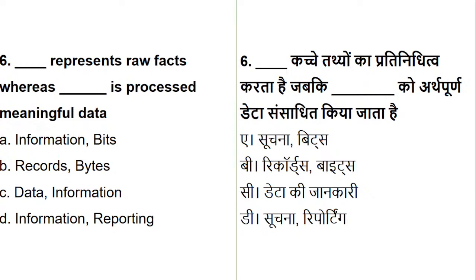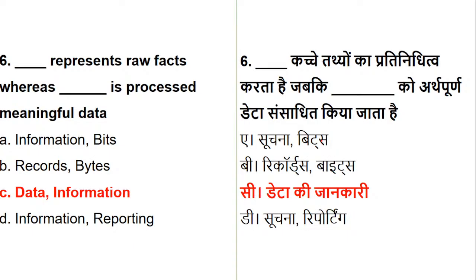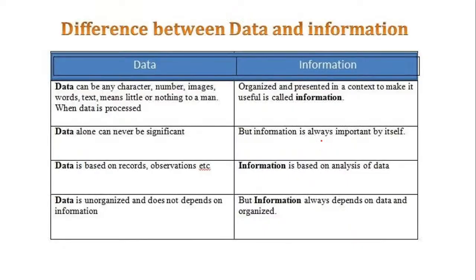Here is a question many students make mistakes on, so it has been brought for revision: dash represents raw facts whereas dash represents processed meaningful data. The options are: Information and Bits, Records and Bytes, Data and Information, or Information and Reporting. The answer is option C — Data and Information. Raw facts are called data; processed meaningful data is called information.